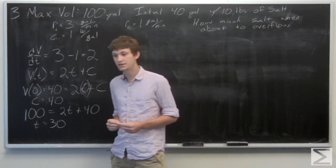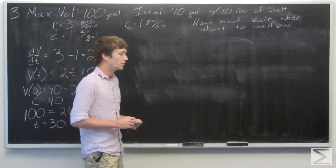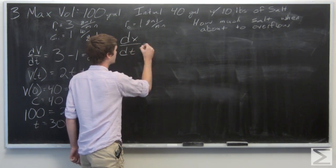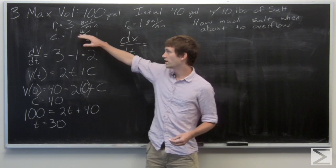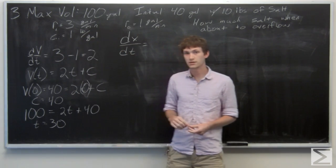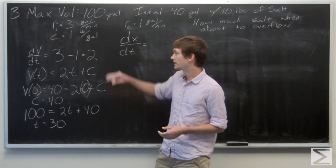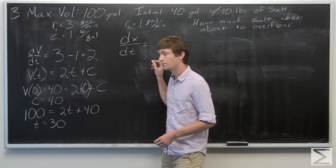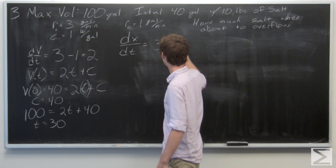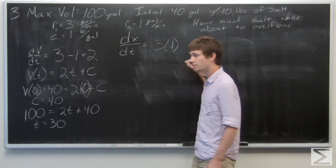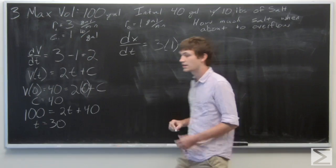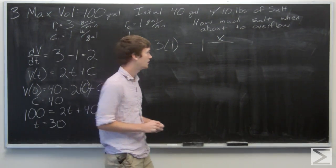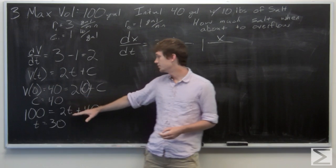Now we let x(t) denote the amount of salt in the tank at time t, and we relate this in a differential equation. The rate in is 3 gallons per minute with a concentration of 1 pound per gallon, so we multiply rate in times concentration in to get pounds of salt per minute. Then we subtract the rate out times the concentration out, which is x divided by the volume at any given time, 2t + 40.